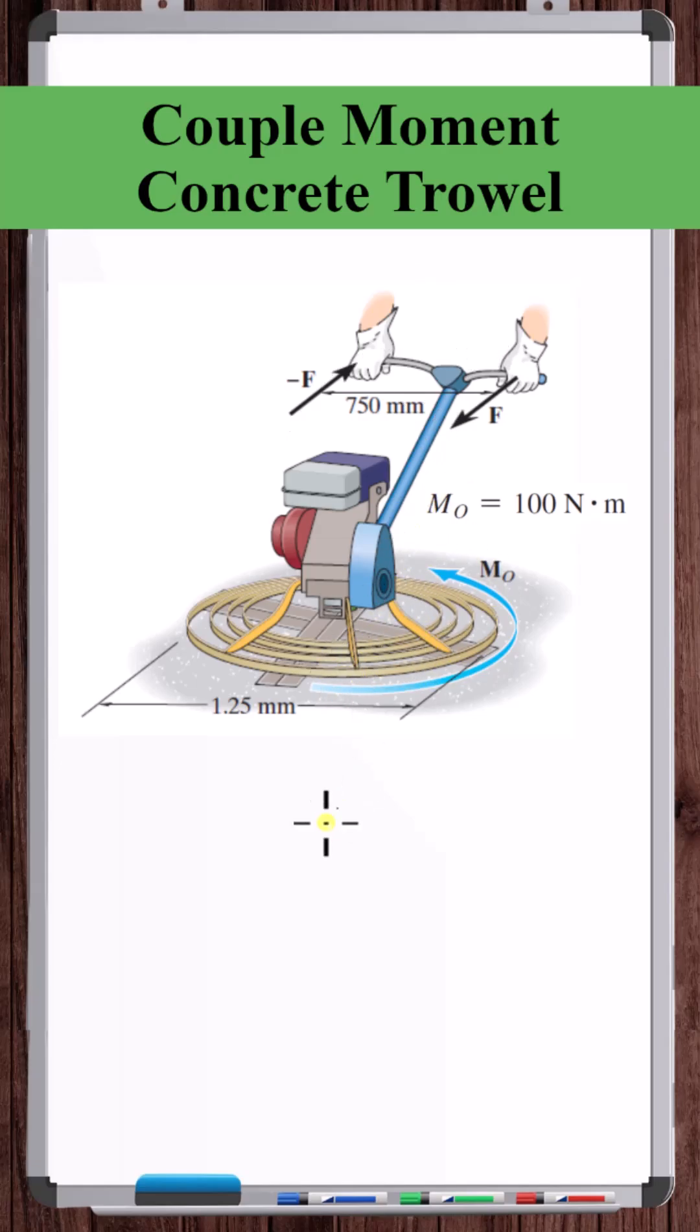Couple moments are free vectors, so all we need to do is say 0.75 meters times F is equal to 100. So the force exerted on the handles from each hand must be 133.3 newtons. Thank you.